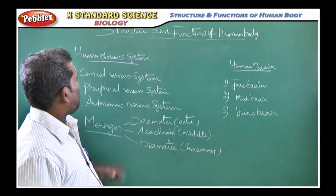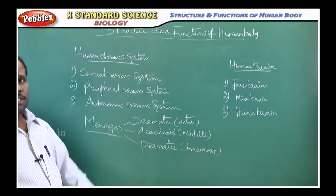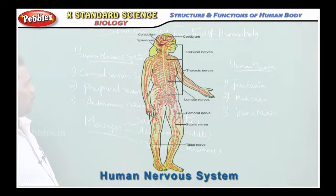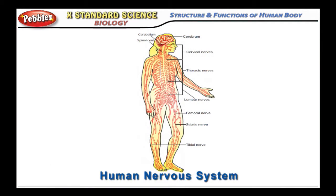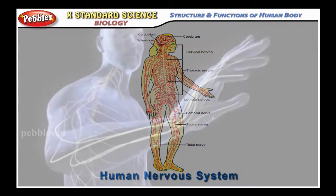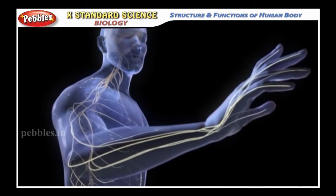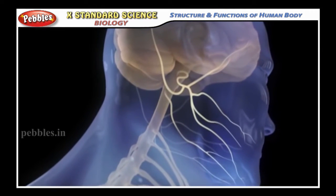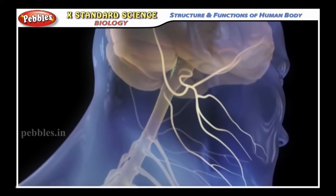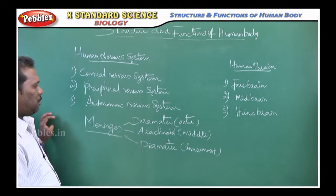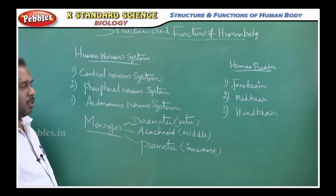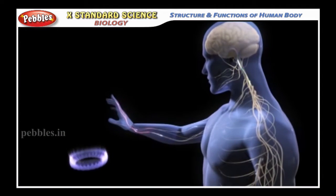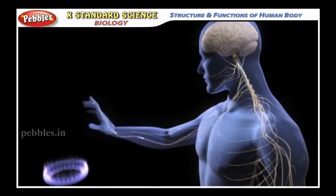Next, we are going to study the human nervous system. You can observe the human nervous system in the slide part. It has the central nervous system, peripheral nervous system, and autonomous nervous system. The central nervous system mainly involves the study of the structure of the brain and spinal cord.